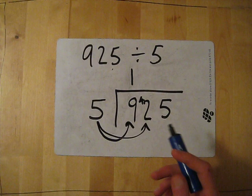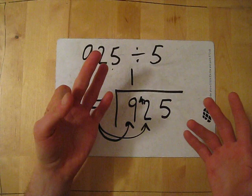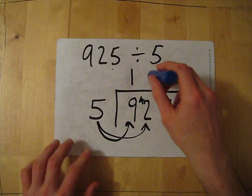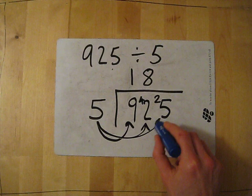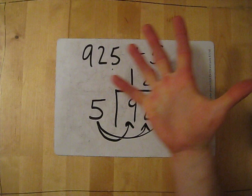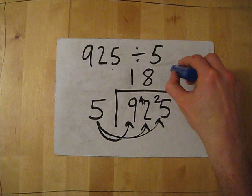So 5 into 42, so it's 5, 10, 15, 20, 25, 30, 35, 40. 45 is too many, so it's 8. So we put our 8 above here, and then the second question, what's left over? So we know that 8 times 5 is 40, so from 42 there will be 2 left over. And finally, 5 into 25. And again, 5, 10, 15, 20, 25. So it fits in 5 times and it's exactly 25, so there's nothing left over, so put the 5 up here.